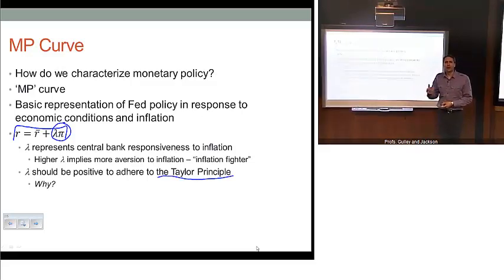Basically what that means is two things. Number one, our MP curve is going to be upward sloping. Number two, it means that monetary policy is going to be stabilizing to inflation. Essentially, monetary policy is going to be responsive enough to raise real rates as inflation goes up to try to push inflation back down.